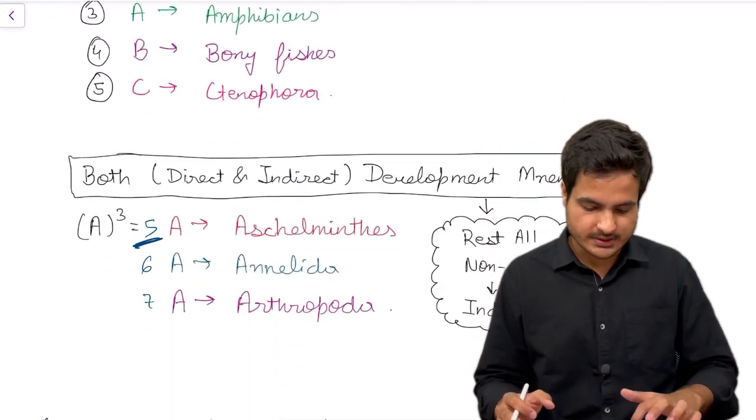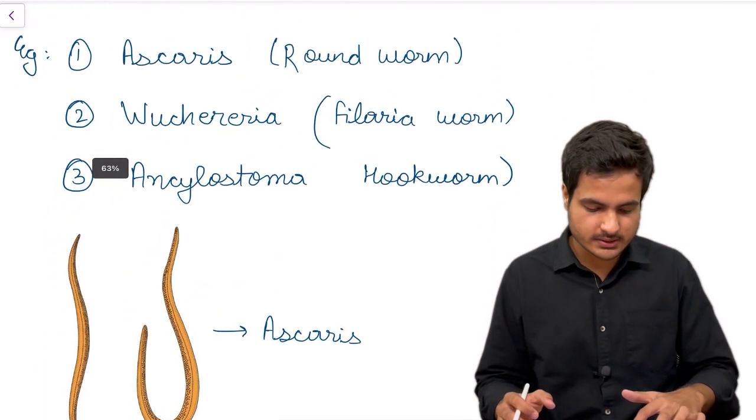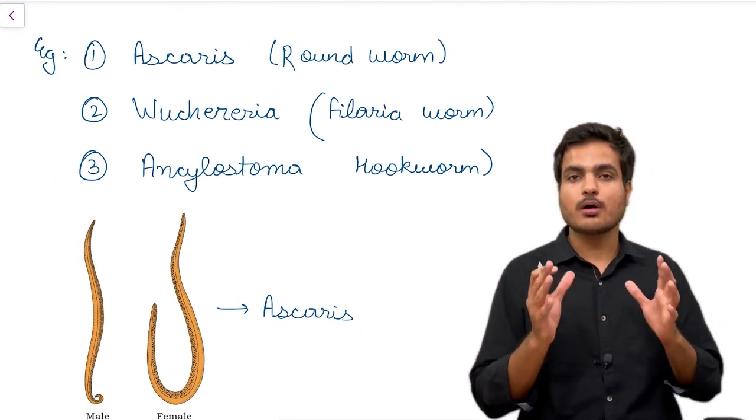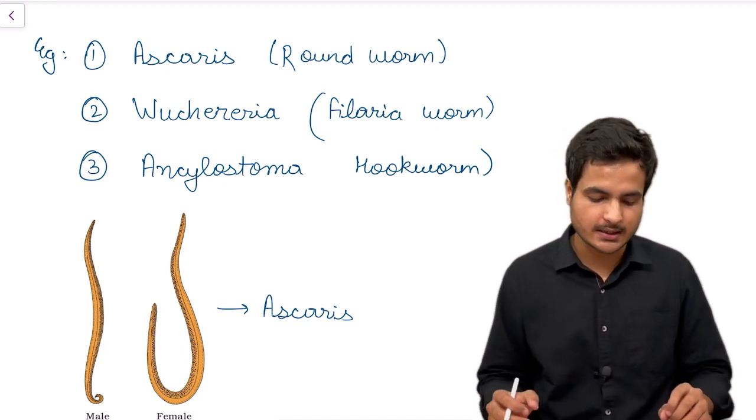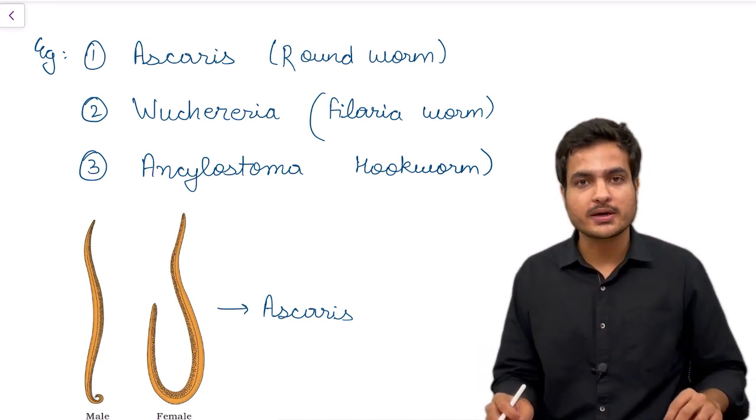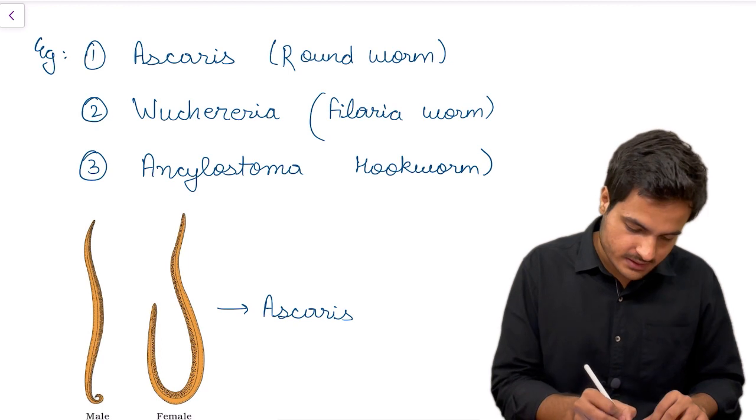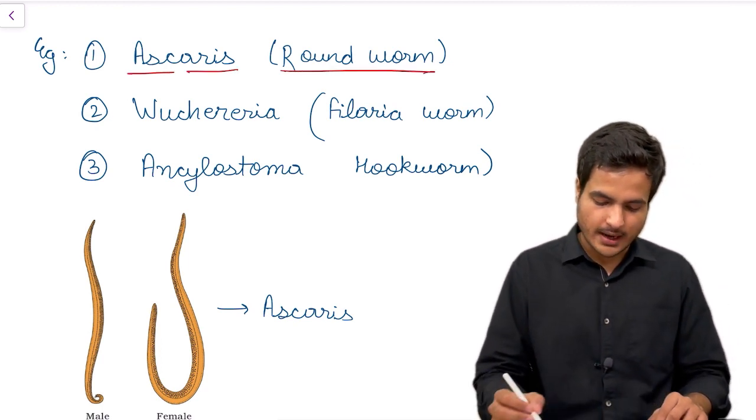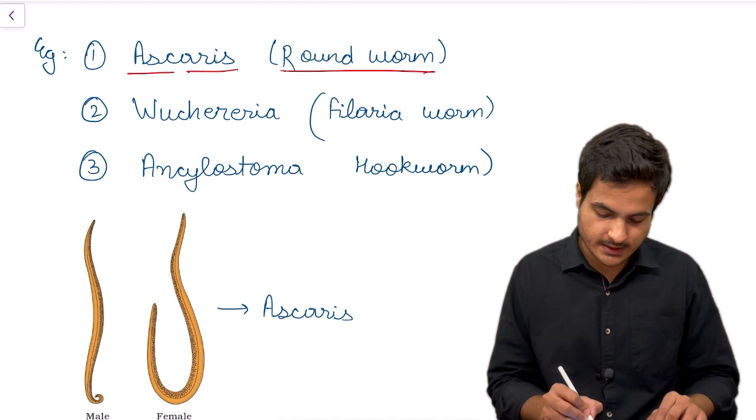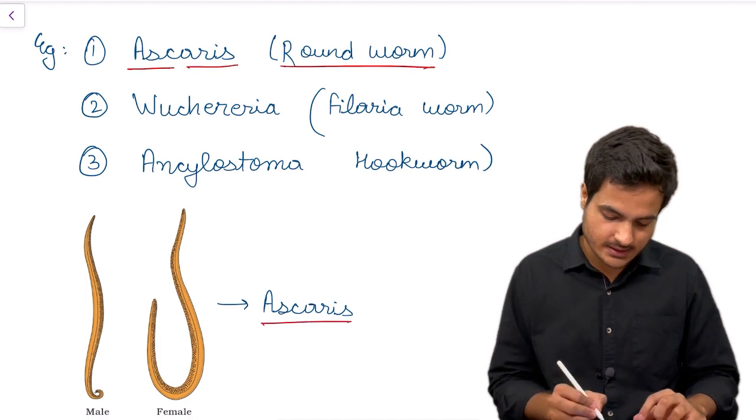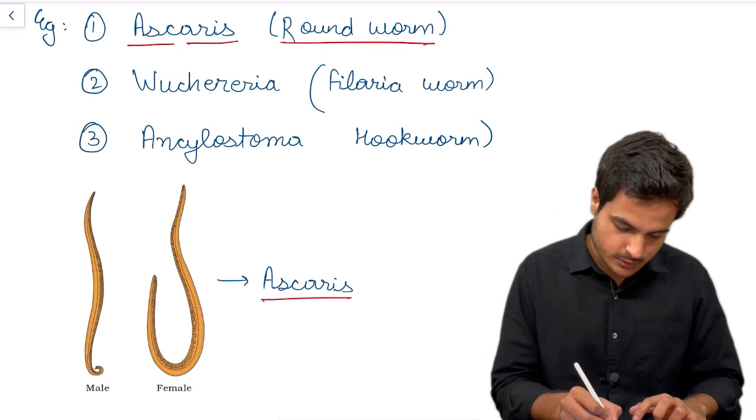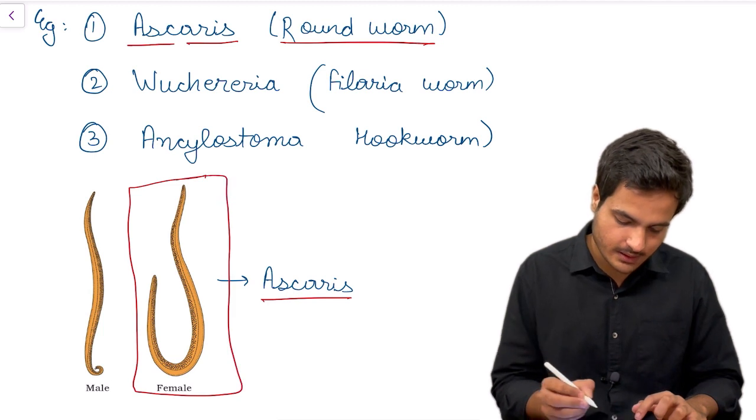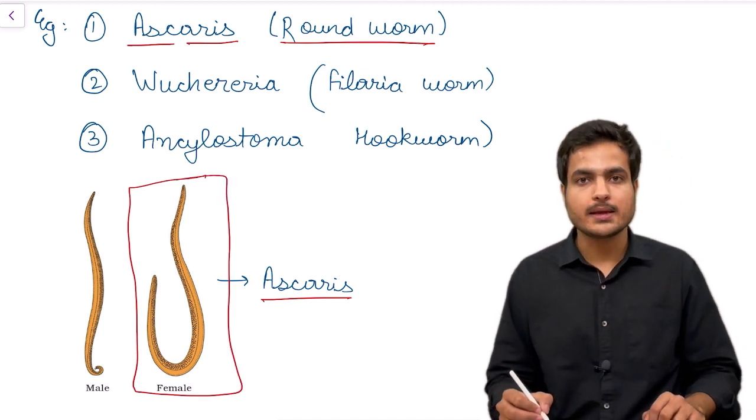These are our mnemonics. Let's move towards the names given of roundworms in NCERT. We have three important names. First is Ascaris which is the roundworm, and we have a diagram also for Ascaris. In that we can easily see that this one is a female and female is longer than the male.